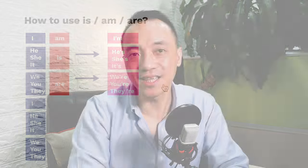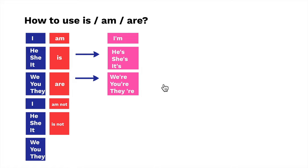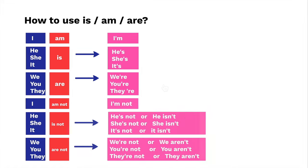For the negative form, we use: I'm not. He is not, she is not, it is not. We are not, you are not, they are not. The short forms are: I'm not; he's not or he isn't; she's not or she isn't; it's not or it isn't; we aren't; you aren't; they aren't.